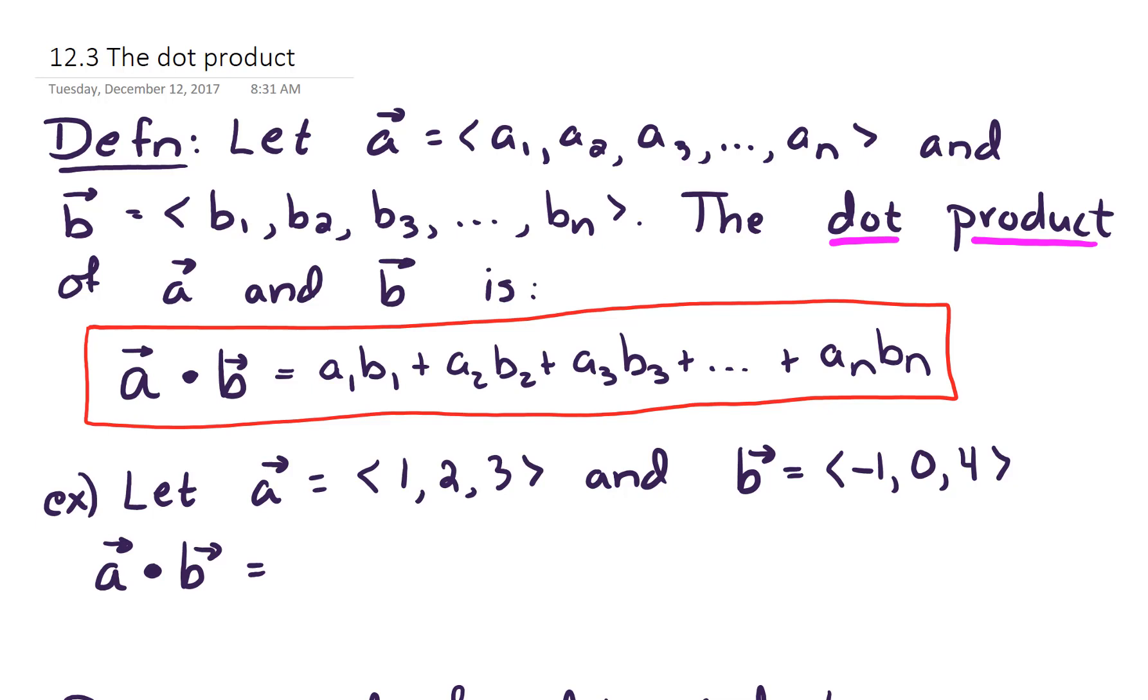Let's find the dot product a dot b. So to begin, we'll do the sum of component-wise multiplication. So we begin with 1 times negative 1, plus second components, 2 times 0, plus our third components, 3 times 4. And if we work that out, the answer is 11.